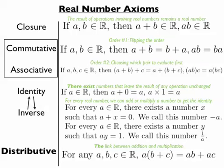And it also works for multiplication. If you have any non-zero a in the real numbers, then there exists a number such that a times y is equal to 1. And we call that number 1 over a.